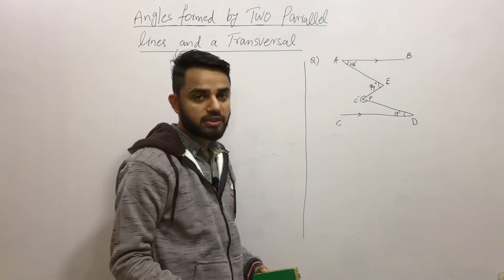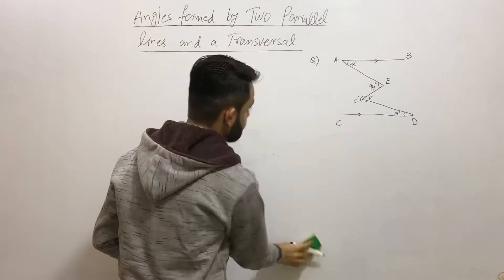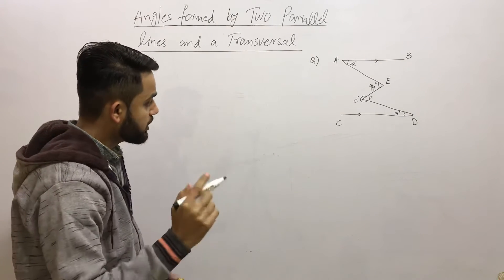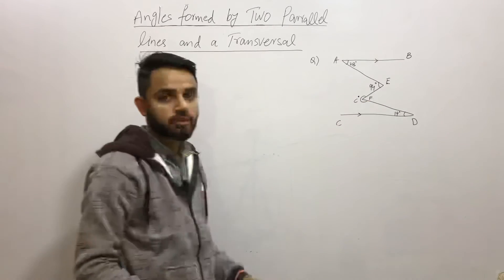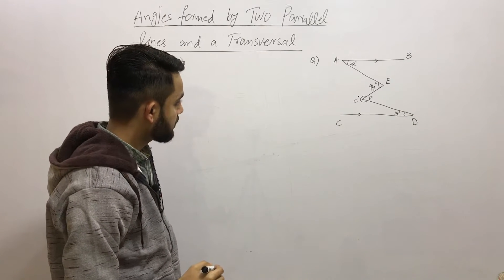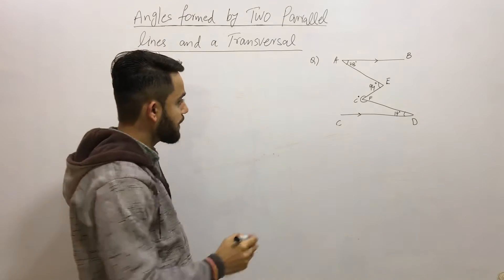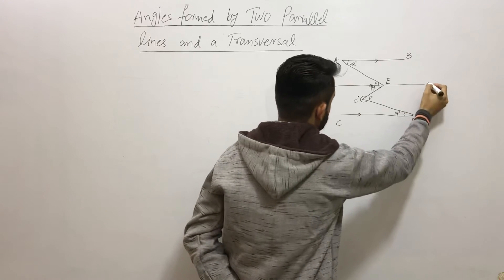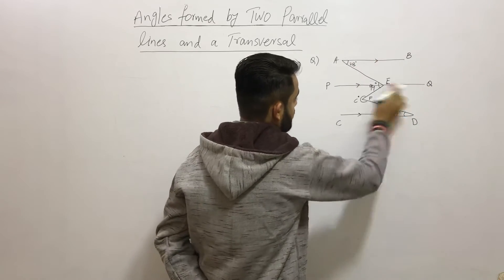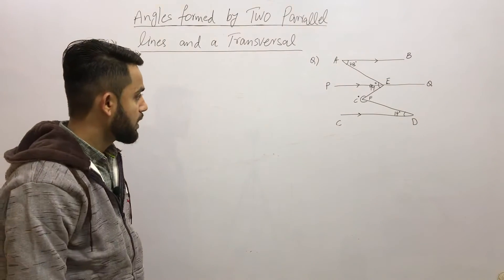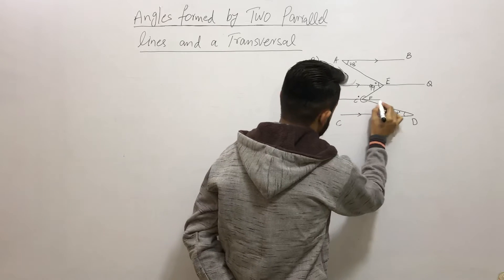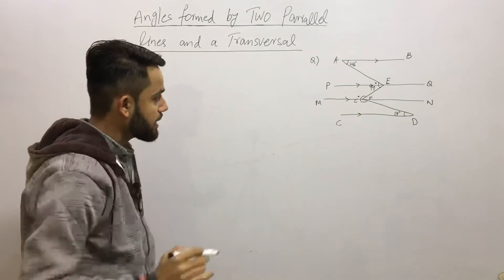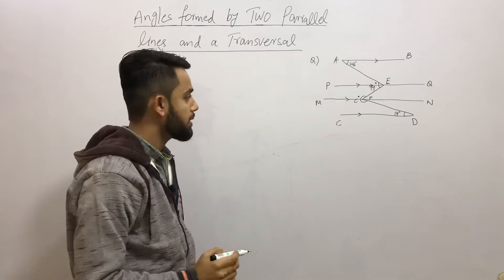In question two, lines AB and CD are parallel to each other. We need to find the unknown angle C. I'll do some construction by drawing a parallel line through the vertex, naming it PQ, and another line MN. So lines AB, PQ, MN, and CD are all parallel to each other.